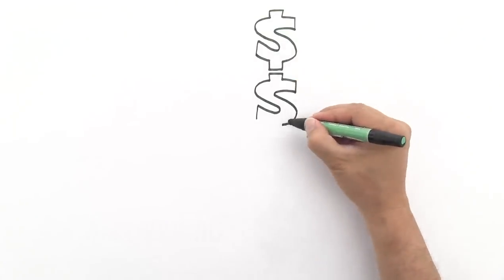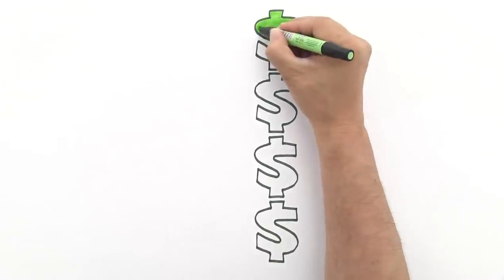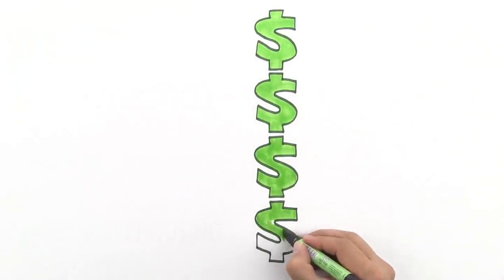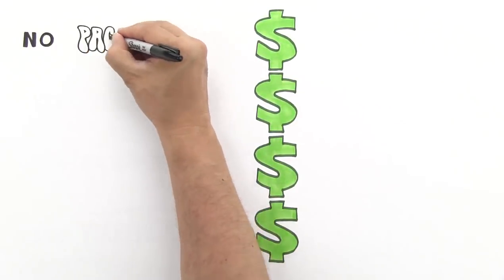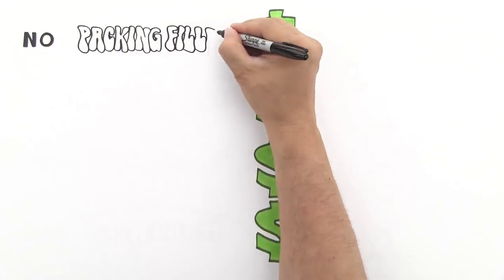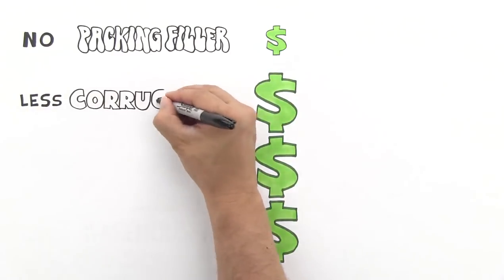By switching to on-demand packaging, companies save time and money in four critical ways. They don't have to spend money on air pillows and filler material, and they buy less corrugated.